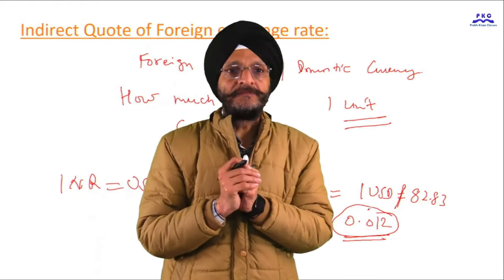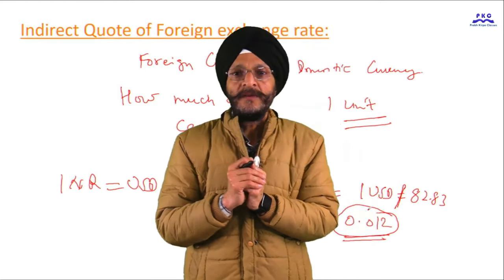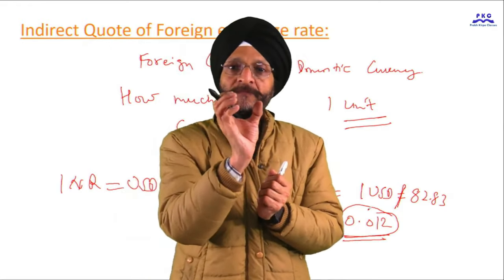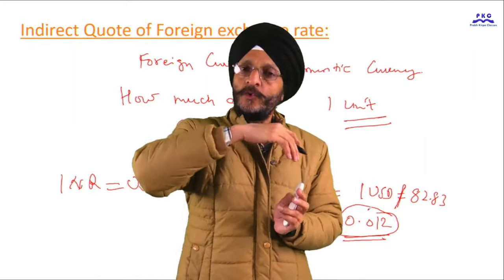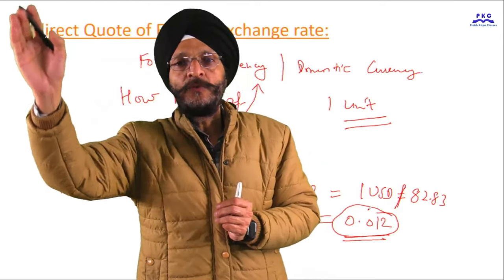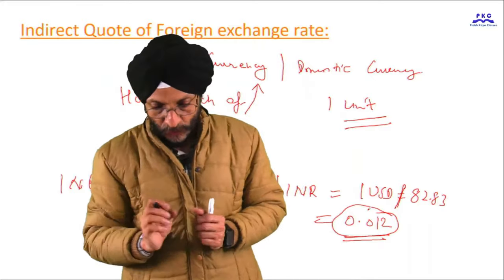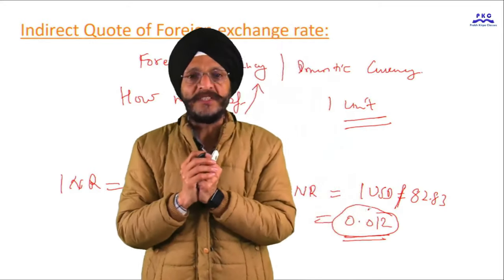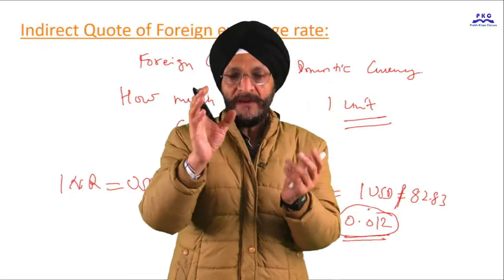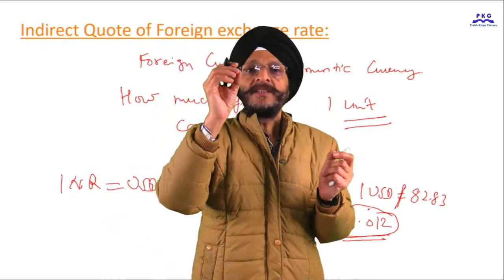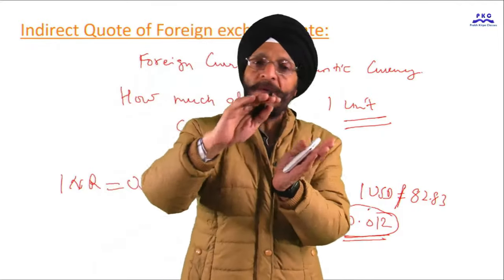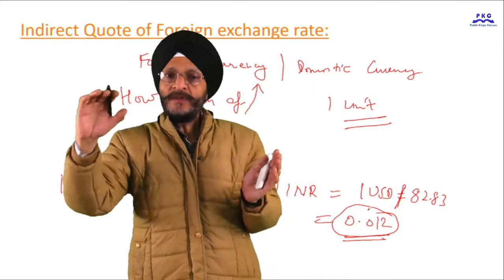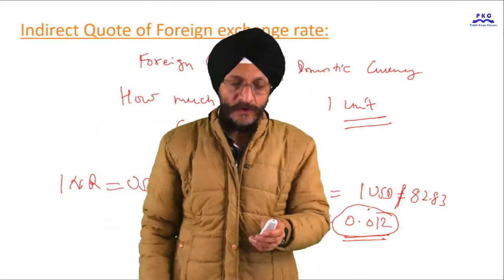In the forex market, when quoting exchange rates, we normally use the direct quote — that is, how much domestic currency we will have to pay to purchase one unit of foreign currency. We use direct quotes because they are easy to understand. For example, to purchase 1 Canadian dollar, we pay 61.04 Indian rupees — that is a direct quote.